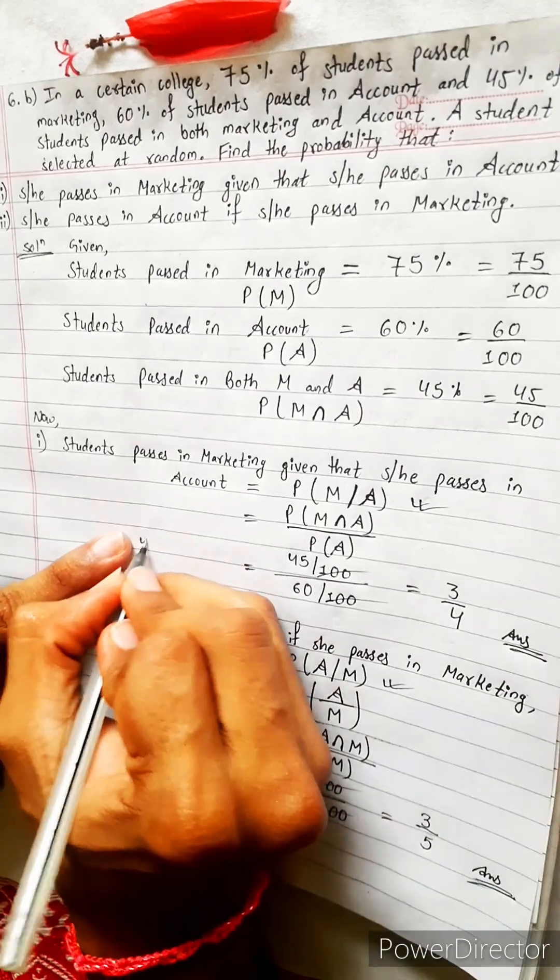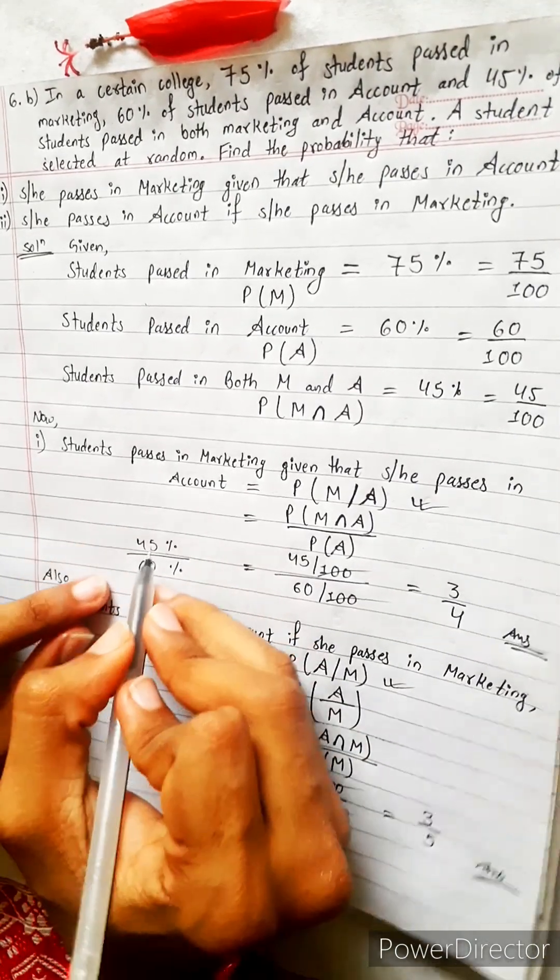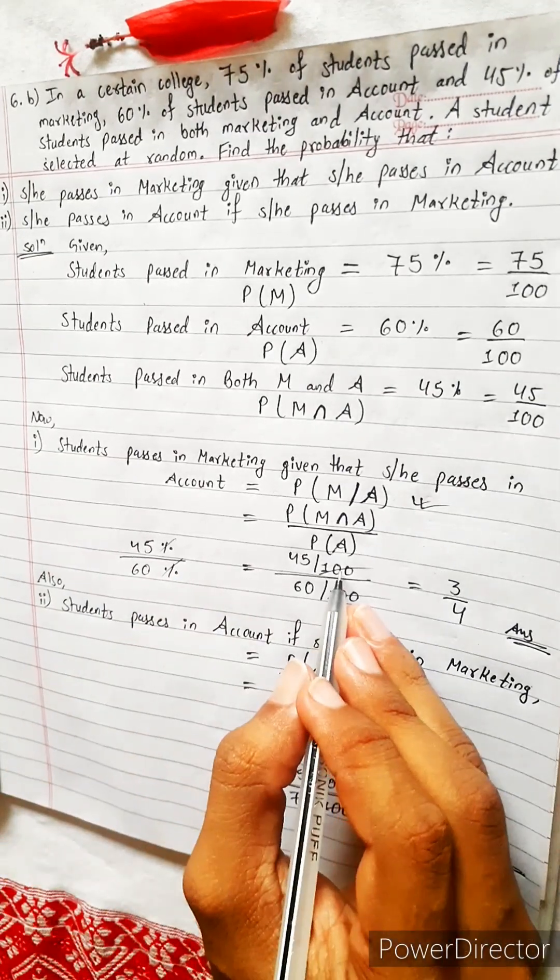Some people do like this also: 45% divide by 60%, and they calculate this, and percent percent cancel also. You can do like this also, this divide by 100.